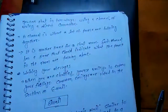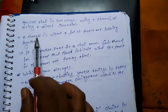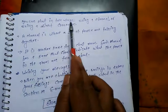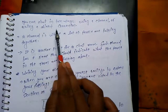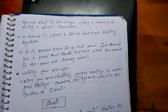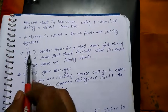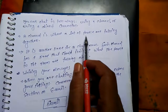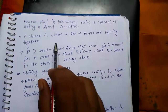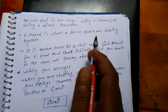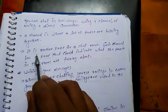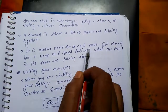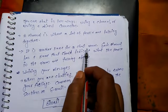You can chat in two ways — दो तरीकों से chat करते हैं: using a channel or using a direct connection. A channel is where a lot of people are talking together. Channel के माध्यम से बहुत सारे peoples एक दूसरे के साथ chatting करते हैं। It is another name for chat room — इसका दूसरा नाम chat room है।